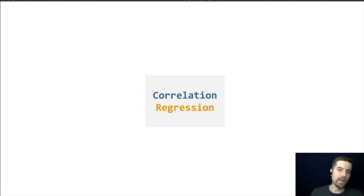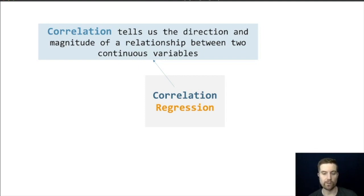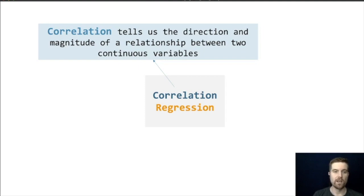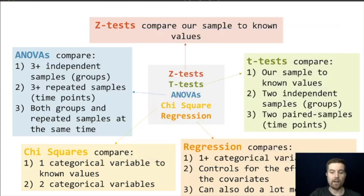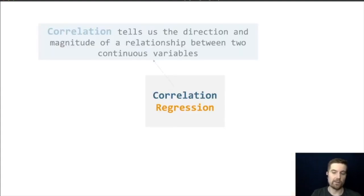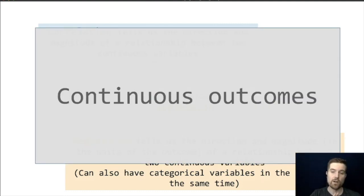When it comes to correlation and regression: correlation tells us the direction and magnitude of a relationship between two continuous variables. In class we focused on Pearson correlation, though Spearman correlation works with ordinal variables. Regression tells us the direction and magnitude in the units of the outcome, and it can also handle categorical predictors and tell us about relationships between the outcome and continuous variables. Here, all of those assume continuous outcomes.